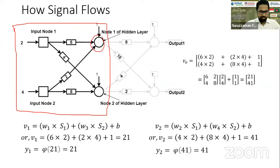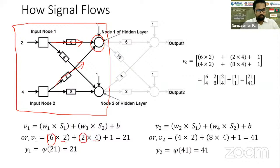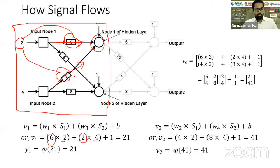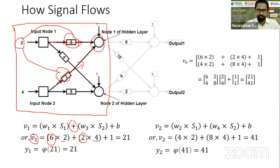We are focusing on only one part of the network. In the first node, signals enter through weight 6 and weight 2. So 2 is multiplied with 6, and 4 is multiplied with 2. After multiplication, the products are added and the weighted sum is calculated — the weighted sum is 21. There is a minor typing mistake in the slide; please understand it should be 4.